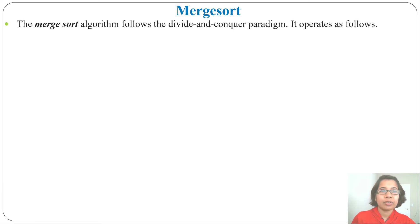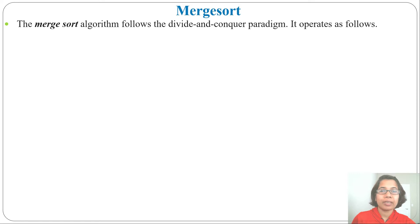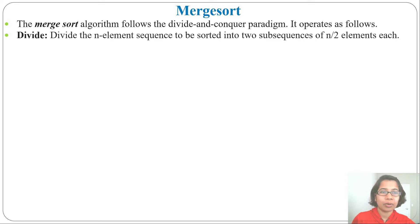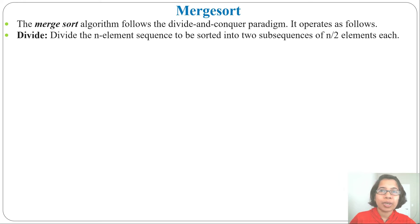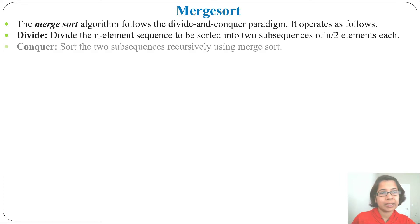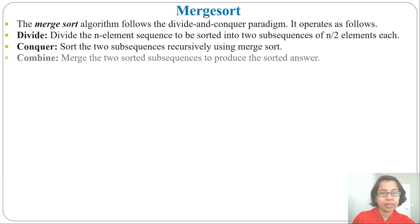It works in three steps. Merge sort follows the divide and conquer paradigm and operates as follows. Divide: divide the n-element sequence to be sorted into two subsequences of n/2 elements each. Suppose we have ten elements — it will divide into two subsequences of five elements each. Next, conquer: sort the two subsequences recursively using merge sort. Next, combine: merge the two sorted subsequences to produce the sorted answer.